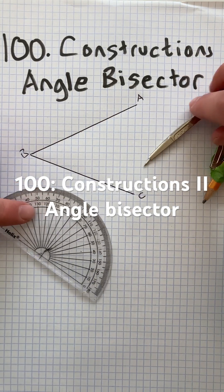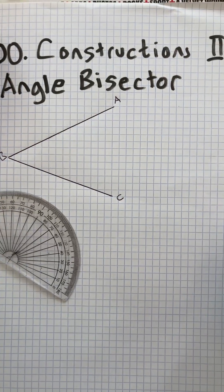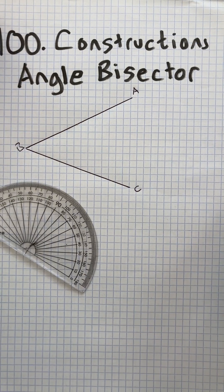Hello and welcome to Martin Math, Topic 100, Constructions Part 2. For this one, we're going to do an angle bisector.